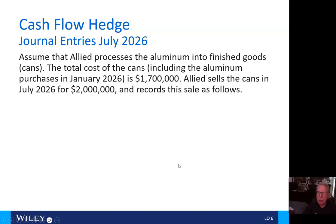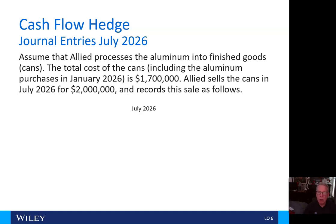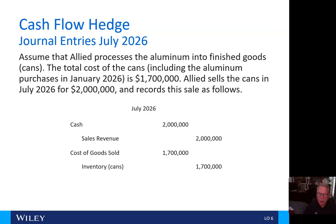Now, journal entries at July 2026 assume that Allied processes the aluminum into finished goods cans, and the total cost of the cans, including the aluminum purchases in January 2026, is $1,700,000. Allied sells the cans in July for $2 million and records this sale as follows: we'll debit cash received and credit sales revenue of $2 million. Then we'll do the cost side with a debit to cost of goods sold and a credit to the inventory of our cans for $1,700,000.